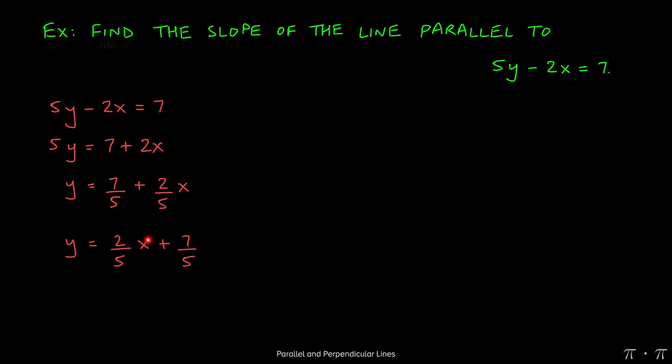Now what we observe here is that the slope of this line is 2 fifths. That means the slope of a line that's parallel must be 2 fifths as well.